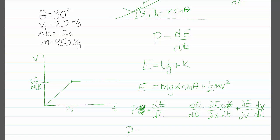So the power is going to be, the derivative of the first term with respect to x is mg sine theta. So that's our dE dx times dx dt, plus the derivative of the second term.